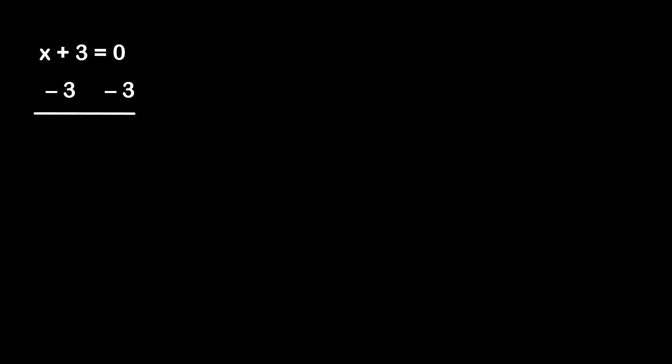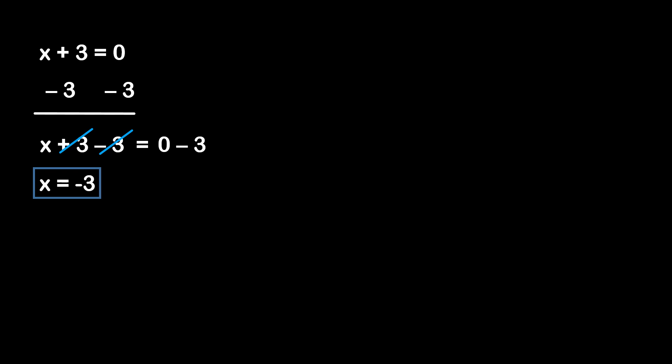That will leave us with x plus 3 minus 3 is equal to 0 minus 3. We see that 3 minus 3 is equal to 0, so those two 3s cancel out. And we're left with x is equal to negative 3. We can box that out — that is all we have to do to solve that linear equation.